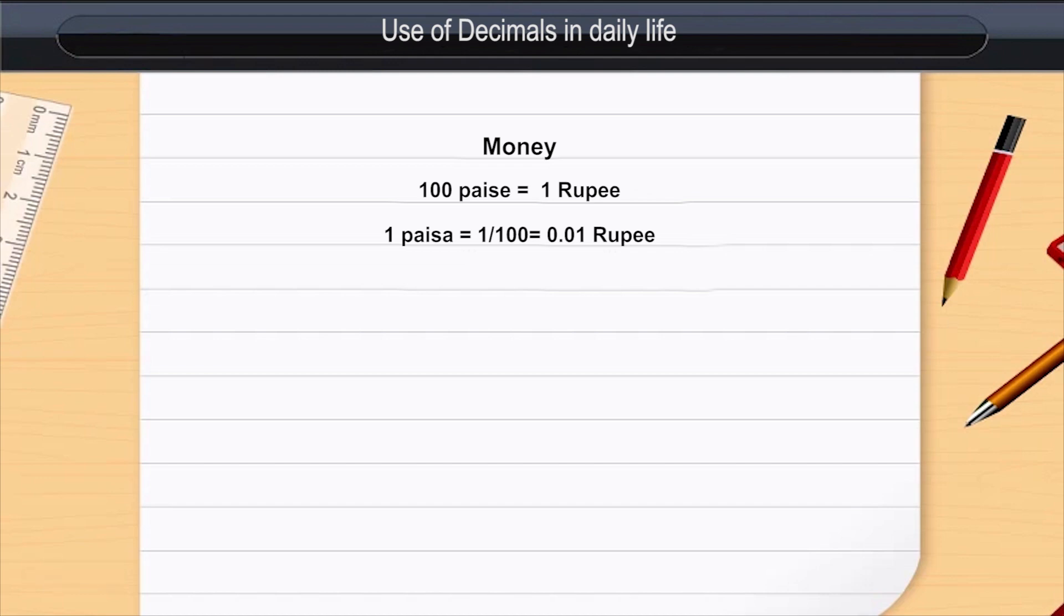How much will 105 paise be? To answer this question, by dividing 105 by 100, we get the answer 1 rupee 5 paise.